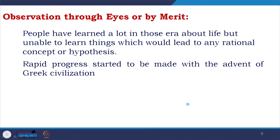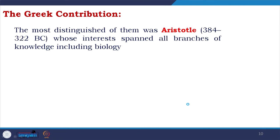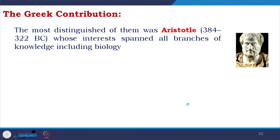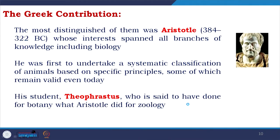Greek civilization produced legendary personalities who, by virtue of their astounding insight, examined the phenomena of the natural world and made seminal contributions to natural philosophy. The most distinguished of them was Aristotle, whose interest spanned all branches of knowledge including biology. He was the first to undertake a systematic classification of animals based on specific principles, some of which are even valid today. What Aristotle did for animals, his student Theophrastus did for plants — so Theophrastus is considered the father of Botany.